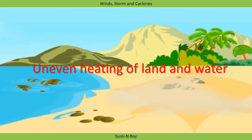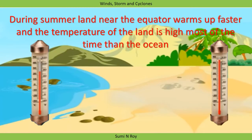Now let us discuss how wind is produced by the uneven heating of land and water in oceans. During summer, land near the equator heats up faster than the water in oceans, so most of the time the temperature of land is higher than that of ocean water. The air over the land gets heated and rises, creating a low-pressure area. The cooler air from over the oceans, being at higher pressure, rushes towards the land, causing wind to blow from the ocean towards the land.